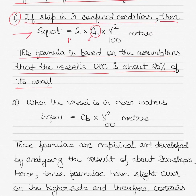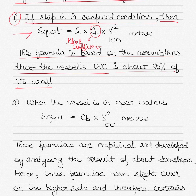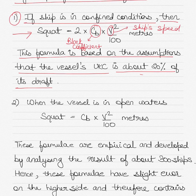Block coefficient is the ratio of the ship's underwater volume to the volume of a rectangular box having the same length, breadth, and depth. V here is the ship's speed or velocity. The key thing is that the formula is based on the assumption that the vessel's under-keel clearance is about 20% of its draft.